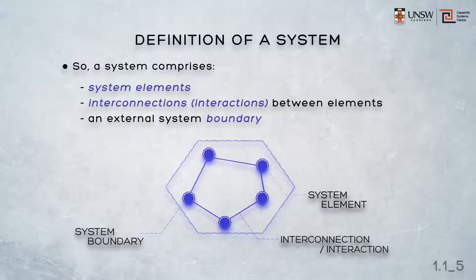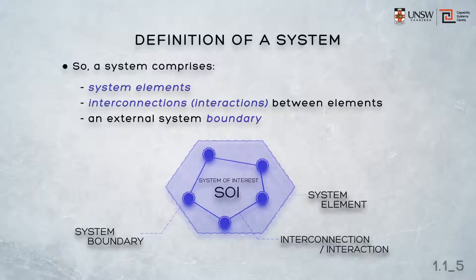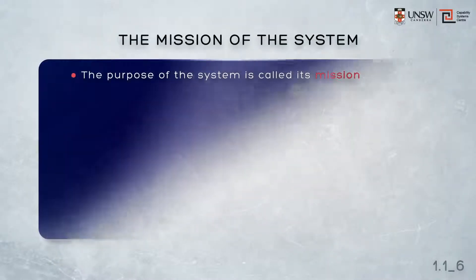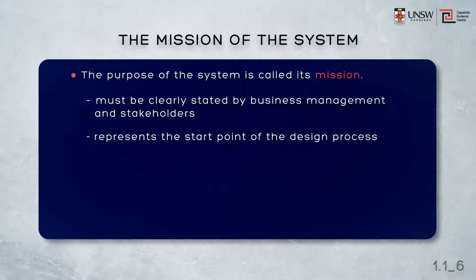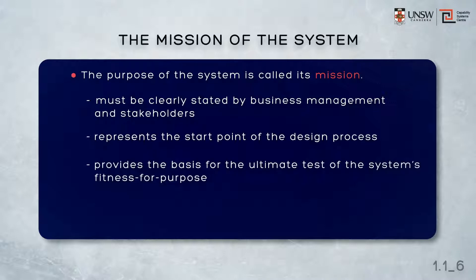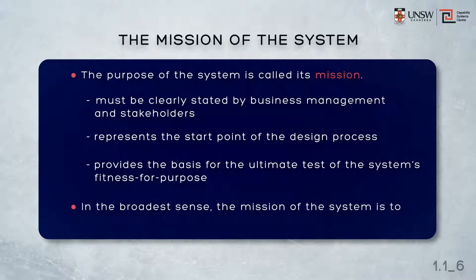When we draw the boundary around selected system elements, we define the system of interest. That system of interest comprises those system elements and their interconnections that exist within our defined system boundary. The purpose of the system is called its mission, which must be clearly stated by business management and stakeholders. The mission represents the start point for the design process, as well as providing the basis for the ultimate test of the system's fitness for purpose once it's been fielded.